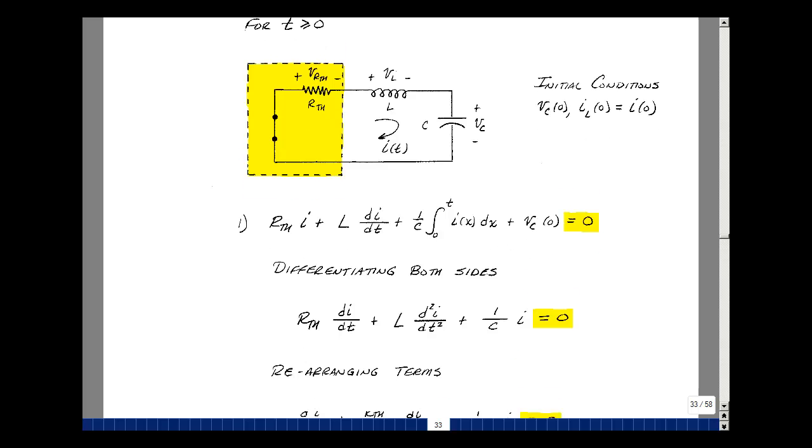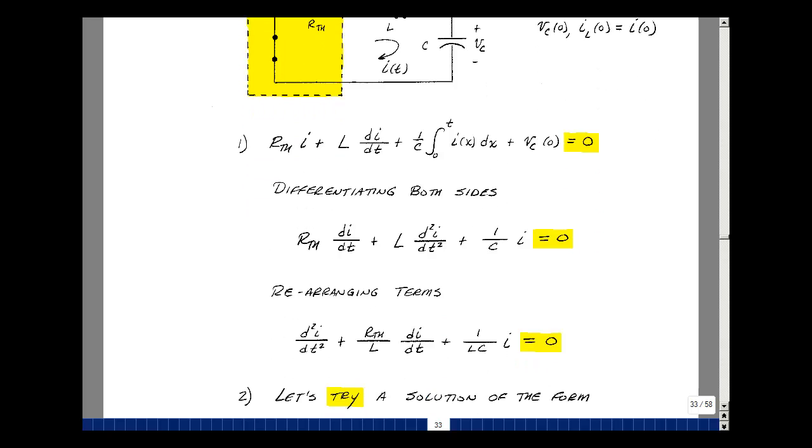Let's rearrange the terms here from the highest derivative to the lowest. Let's also divide through by L. So if I divide through by L, I just have this second derivative of I with respect to T. And then dividing through by L over here for the first derivative, R thevenin over L, dI/dt. And then lastly, dividing here by L times I.